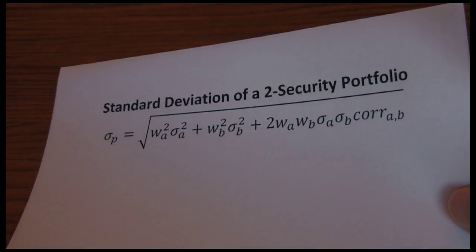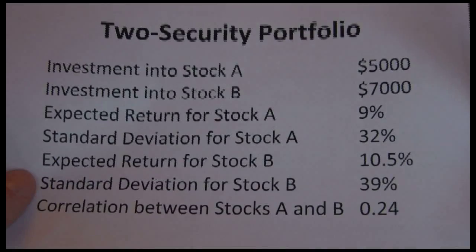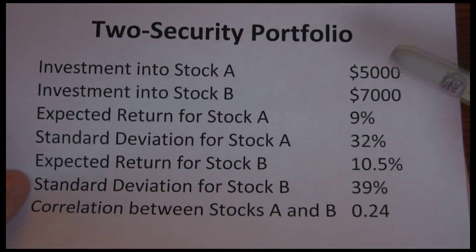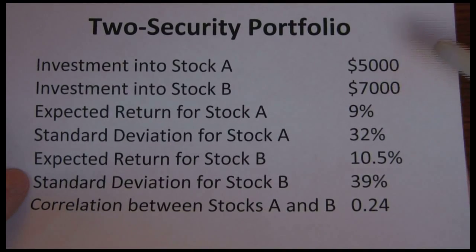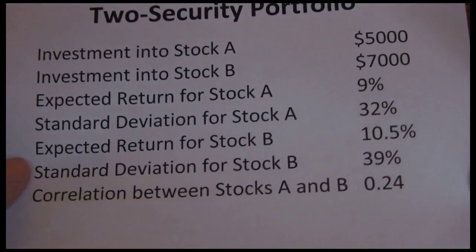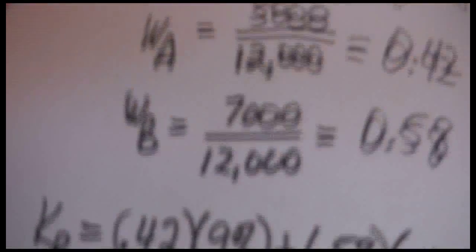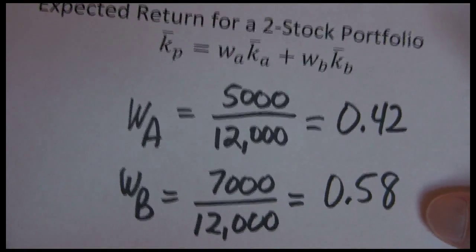So let's walk through our example again. We're going to use this same problem that we did with the expected return for our two-security portfolio. Our investment in stock a is 5,000. Our investment in stock b is 7,000. As we found out before, that gave us a weight in stock a of .42 and a weight in stock b of .58.